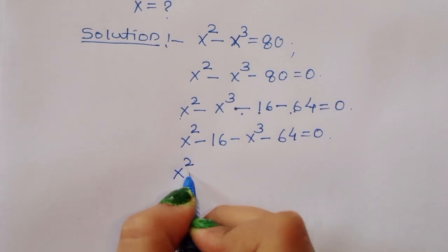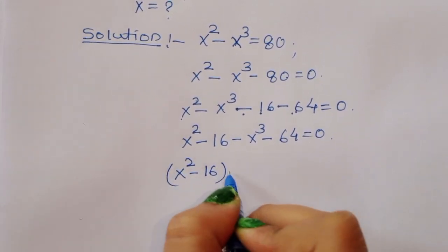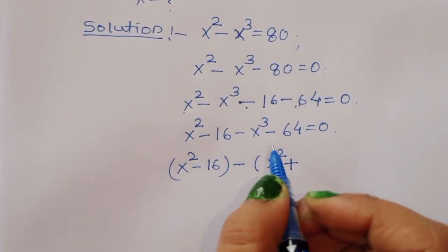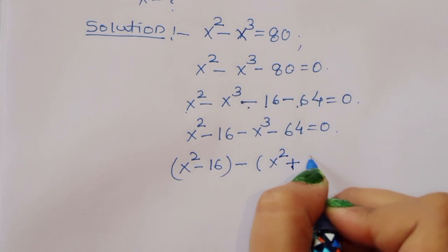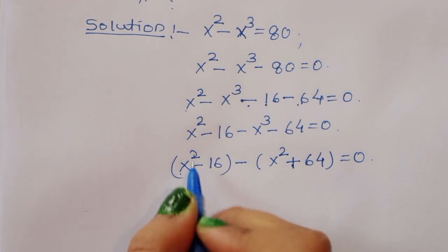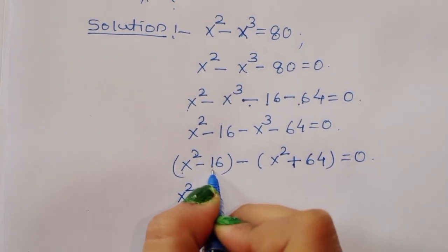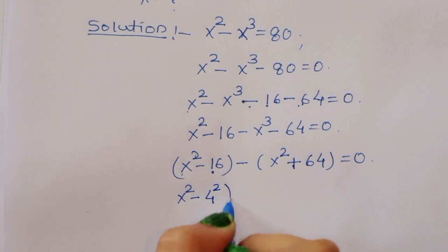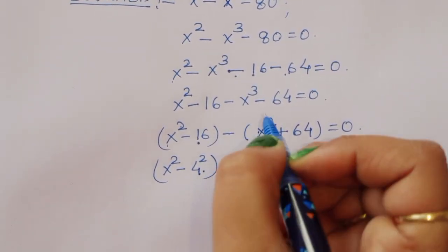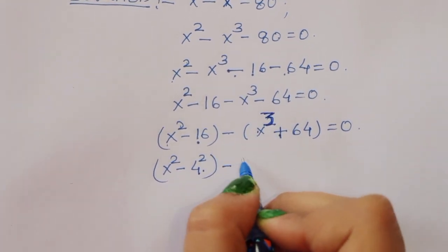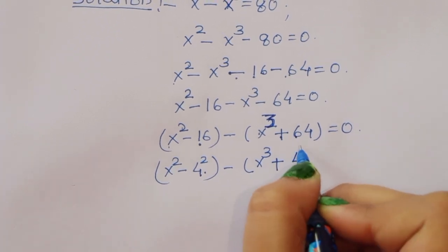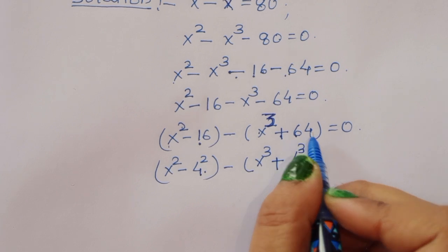Now, x squared minus 16 minus x cubed minus 64. Since we are taking minus outside, it becomes plus 64. So we have x squared minus 16 minus (x cubed minus 64), which is x squared minus 4 squared minus (x cubed minus 4 cubed), since 4 squared is 16 and 4 cubed is 64.